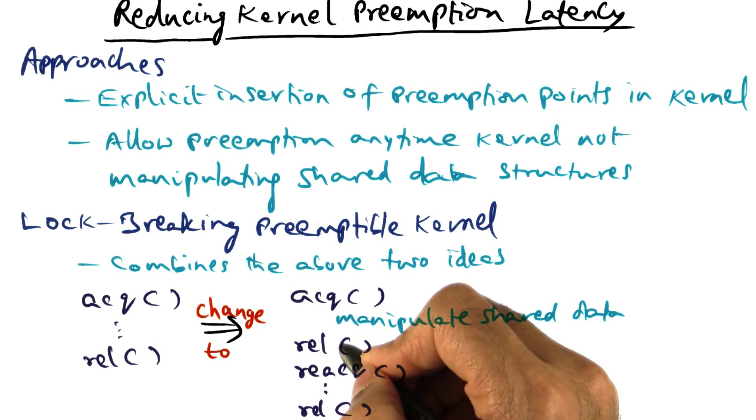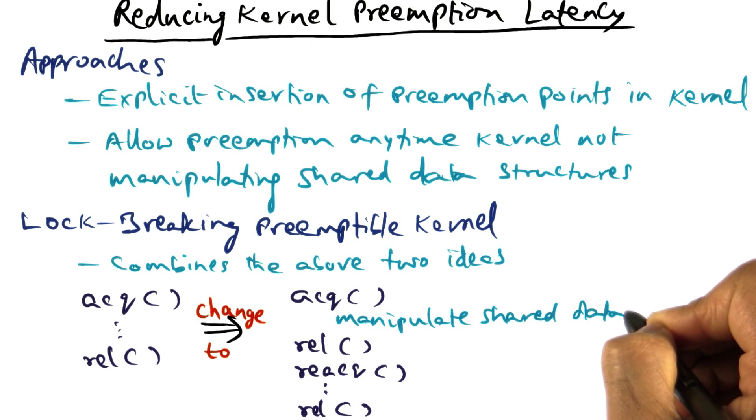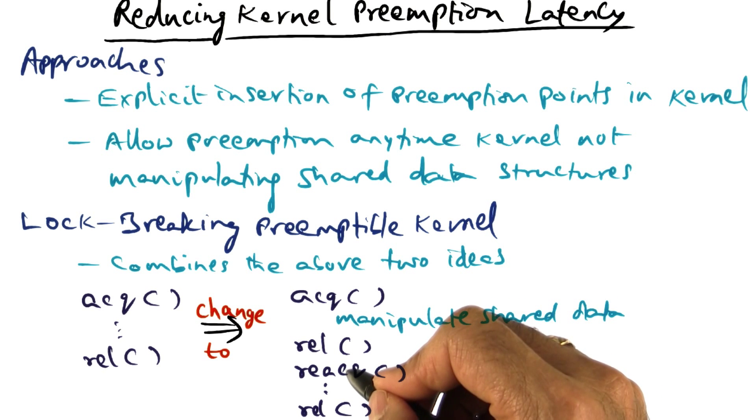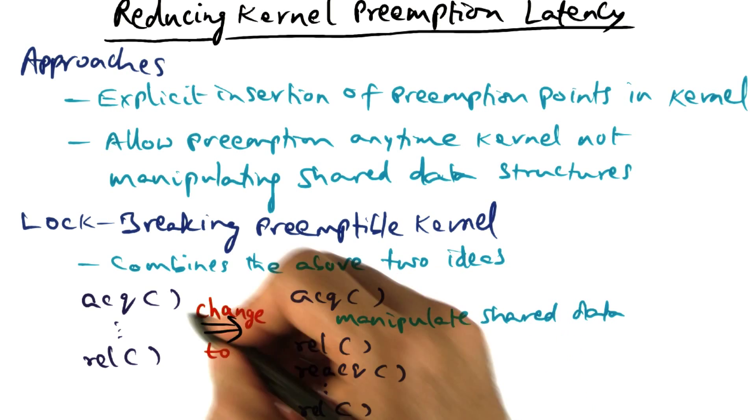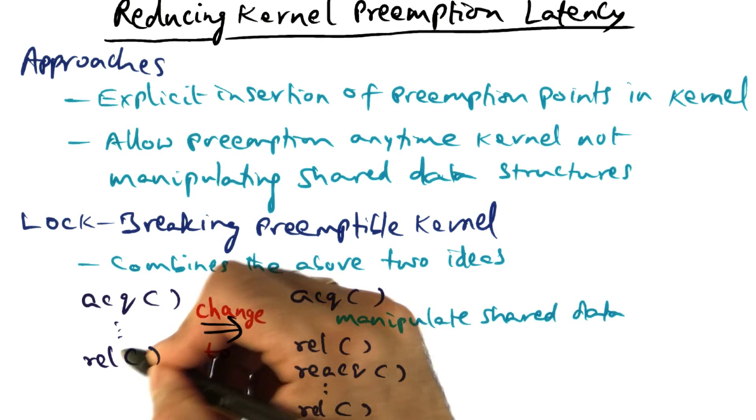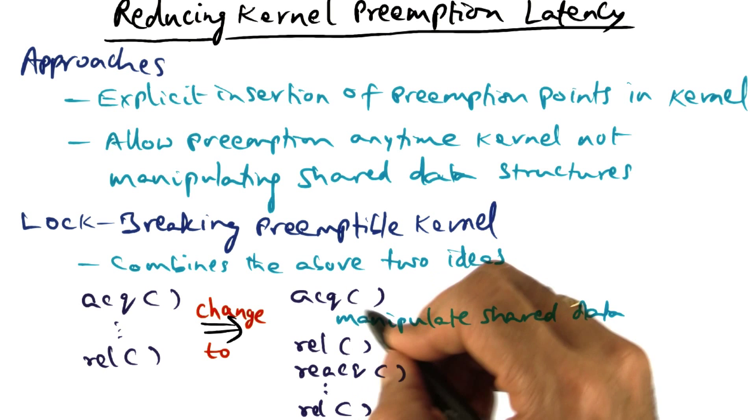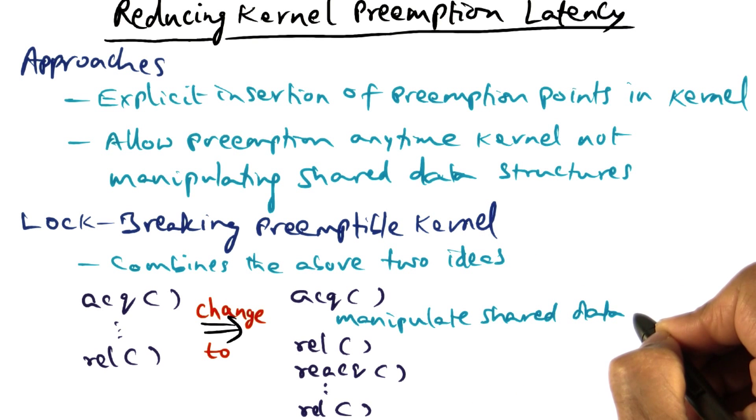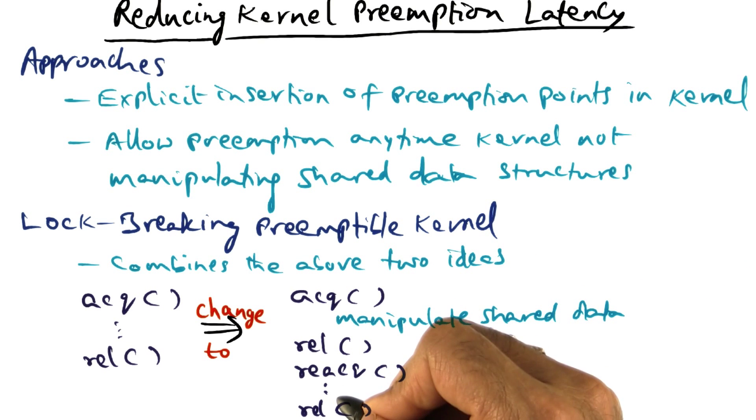And the reason you're releasing the lock is because you're done with manipulating the shared data structures. And then we will reacquire the lock and finally release it. So essentially we replace this long critical section with two shorter critical sections—one manipulating shared data, and the rest of the code here.